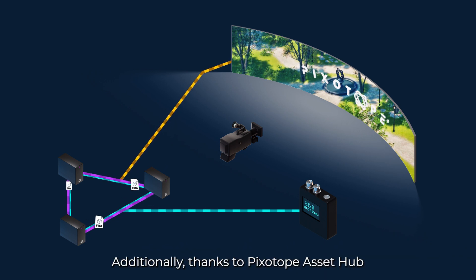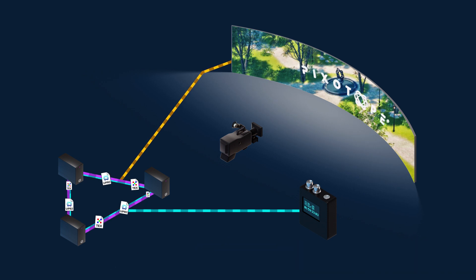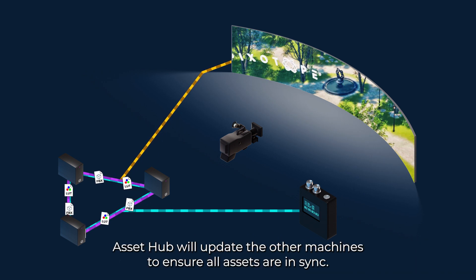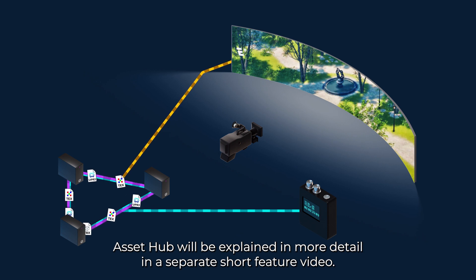Additionally, thanks to Pixytope AssetHub, if an asset or a project file is modified on one of the machines, AssetHub will update the other machines to ensure all assets are in sync. AssetHub will be explained in more detail in a separate short feature video.